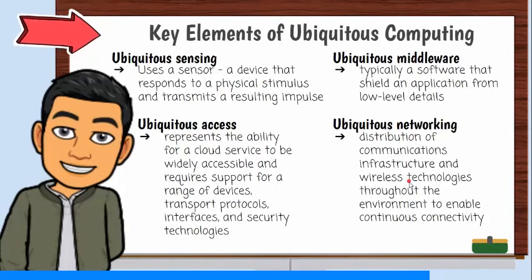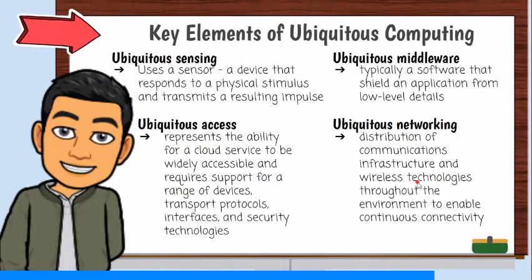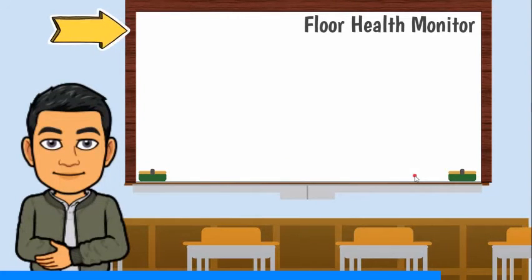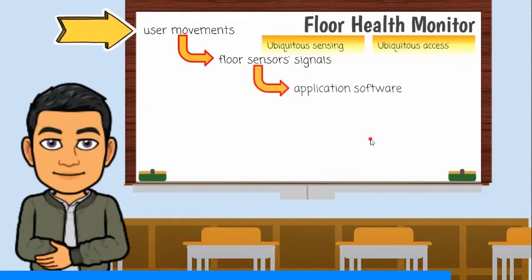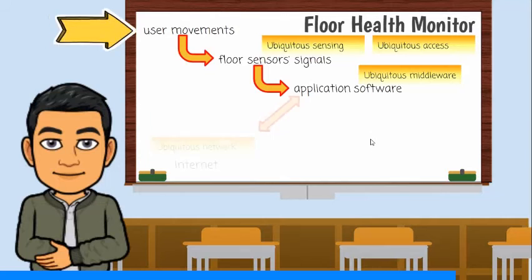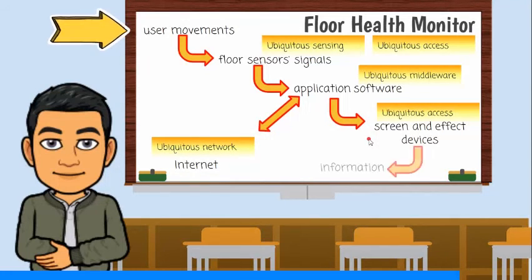The last key element is ubiquitous networking. It is the distribution of communications infrastructure and wireless technologies throughout the environment to enable continuous connectivity. Here's an example where all these elements are identified: the floor detects user movements through its sensors, which send signals accepted by a device with application software. The device sends data to the cloud, and useful or relevant information needed may be returned and shown on the screen to effect devices.